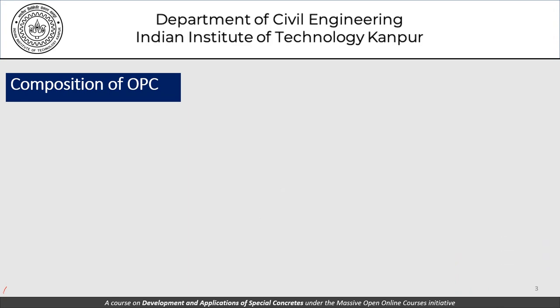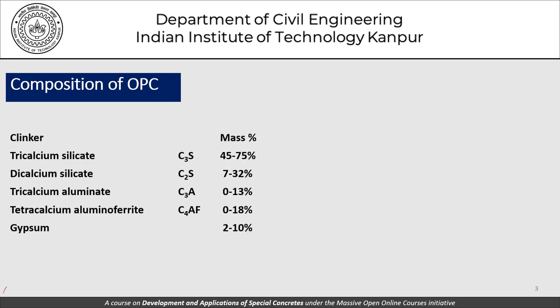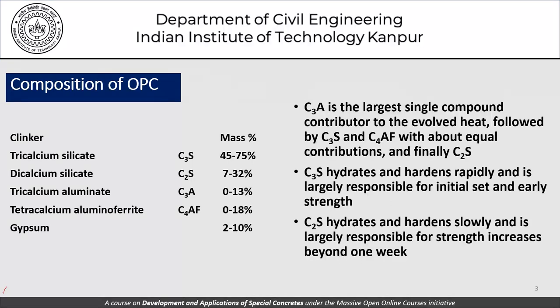As we begin the discussion on heat of hydration, the first thing that comes to mind is the composition of cement. As far as clinker is concerned in ordinary Portland cement, it consists of tricalcium silicate C3S, dicalcium silicate C2S, C3A, and primarily C4AF. Gypsum also contributes about two to seven percent of the cement mass. From a heat of hydration point of view, C3A is the largest single compound contributor to evolved heat, followed by C3S and C4AF with about equal contributions, and finally C2S.